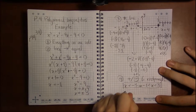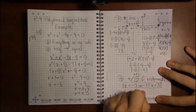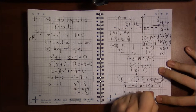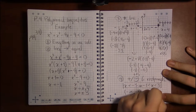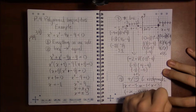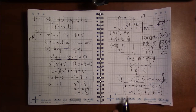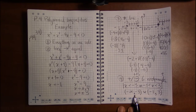In interval notation, the answer is from minus infinity to minus three with parentheses on both ends, union, minus one to three with parentheses on both ends — excluding both endpoints. That's your answer in interval notation. We'll do one more example of this in another video.